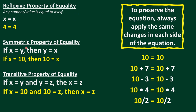Symmetric property of equality: if x equals y, then y equals x. Just like symmetry — they look the same. For example, if x equals 10, then 10 equals x. If the value of y is 10, then 10 equals x, so y equals x. That is the symmetric property.